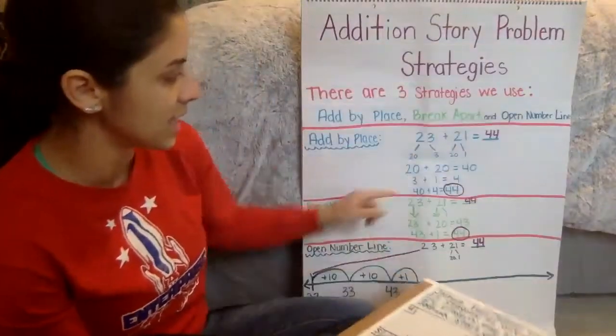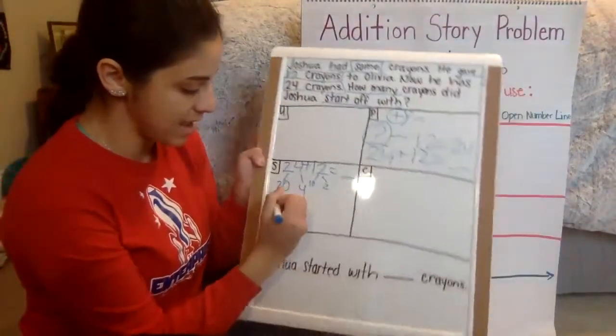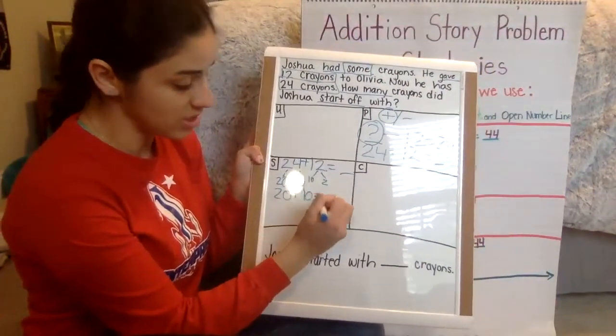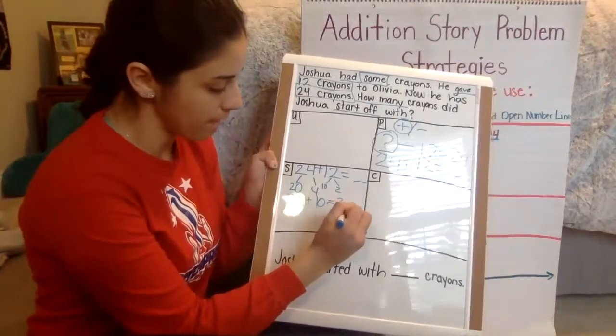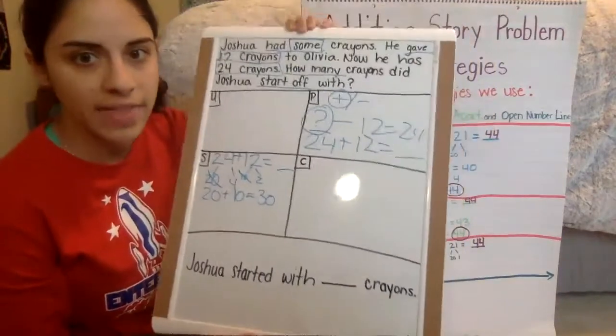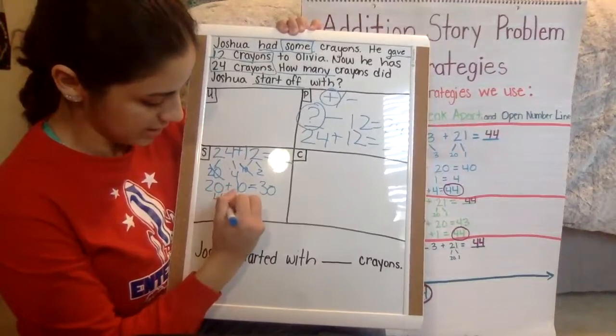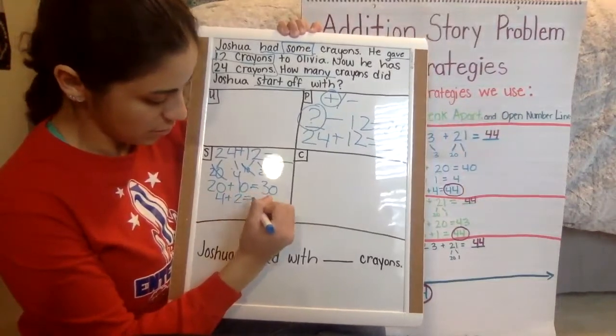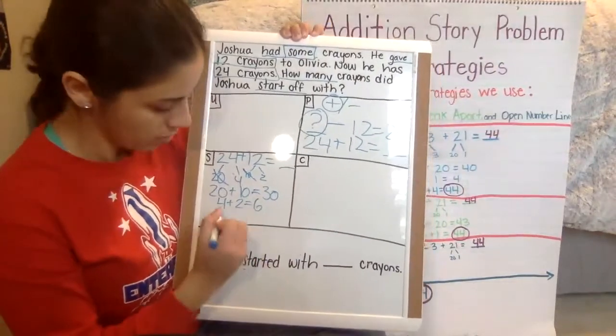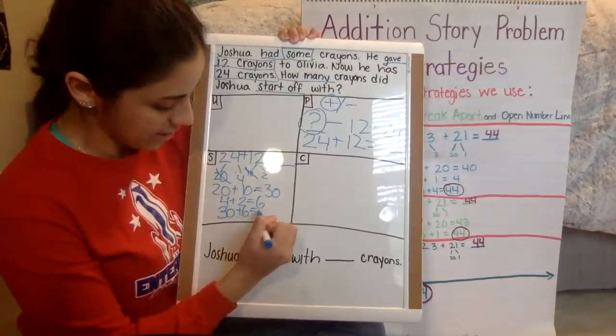Now, remember the first thing I have to do after I do that is we have to add the tens together. So I'm going to add 20 plus 10, which equals 30. And then we're going to cross those out because I already added those. And then I'm going to do 4 plus 2 to add the ones, which equals 6. We're not done yet. We have to add these two numbers to get our total. So 30 plus 6 equals 36.